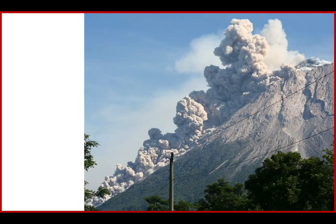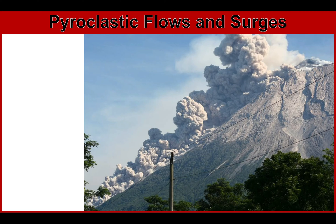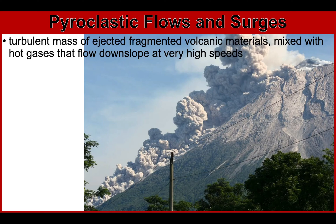The next hazard is pyroclastic flows and surges. This figure shows a pyroclastic flow racing down the flanks of Mount Merapi in Indonesia during the 2006 volcanic event. Pyroclastic flows, also called pyroclastic density currents, are a turbulent mass of ejected fragmented volcanic materials — ash and rocks — mixed with hot gases that flow downslope at very high speeds. Pyroclastic surges are the more dilute or more mobile derivatives of pyroclastic flows. Pyroclastic flows and surges are potentially highly destructive due to their mass, high temperature, high velocity, and great mobility.